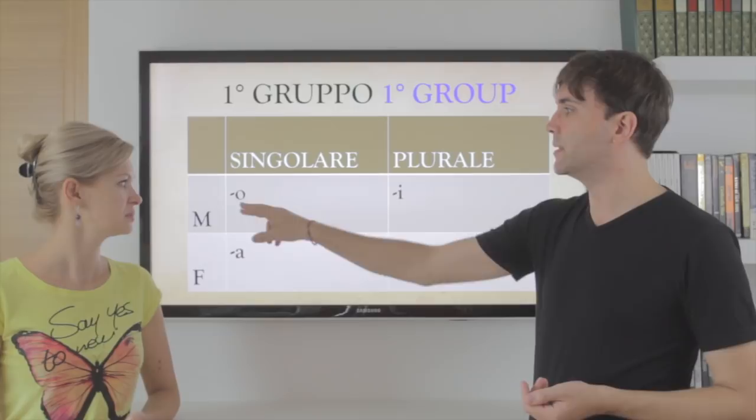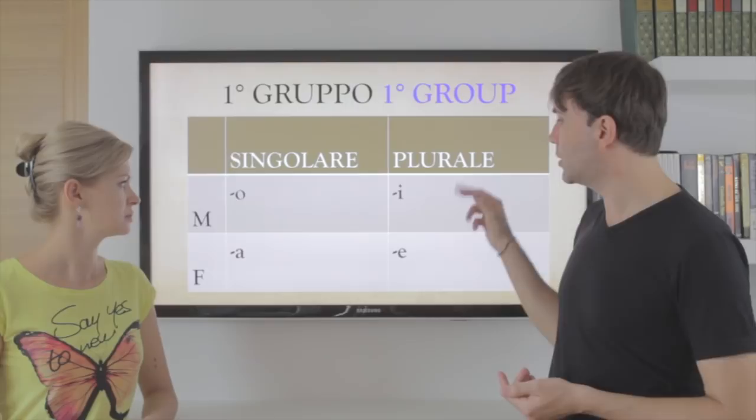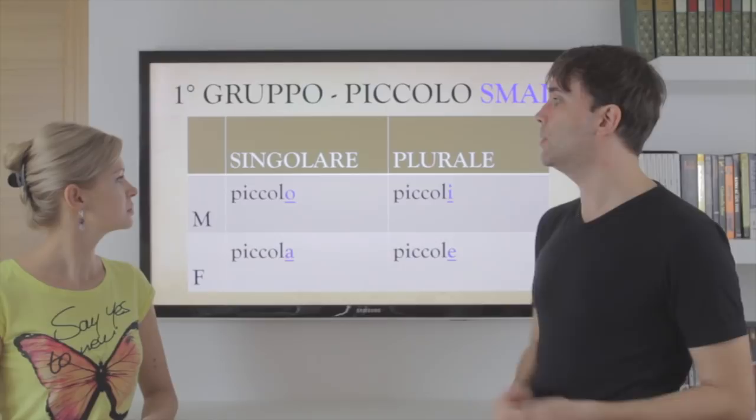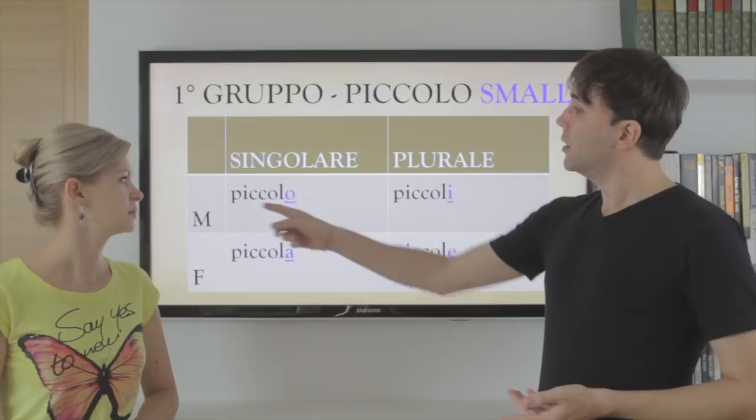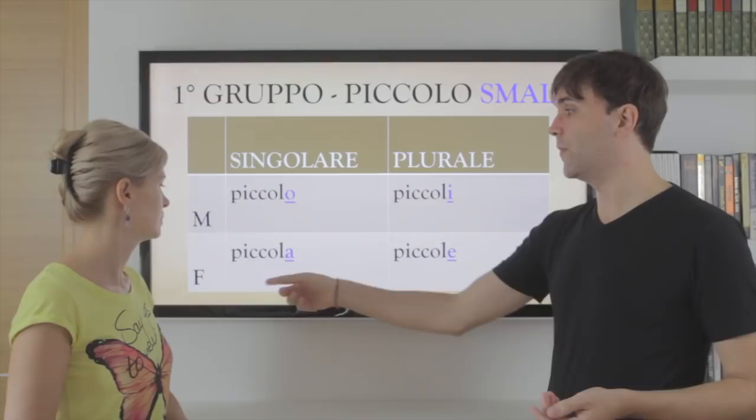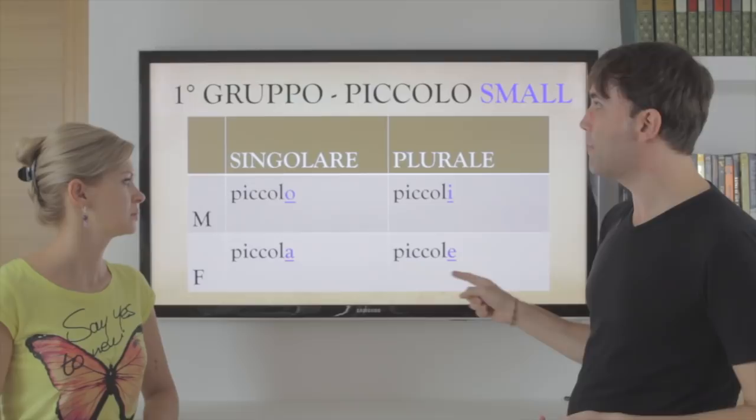First group: masculine ends in O, the plural ends in I. Feminine ends in A, the plural becomes E. Here's an example. So the adjective 'small' — piccolo — piccolo becomes piccoli. And again, small for the feminine version: piccola, which becomes piccole.